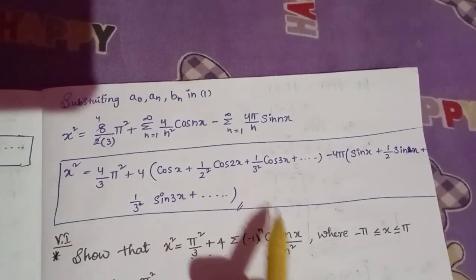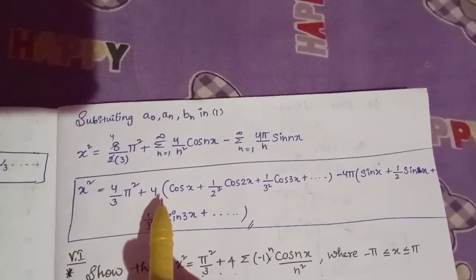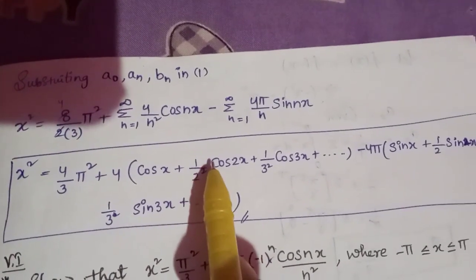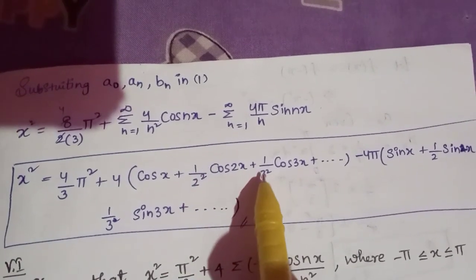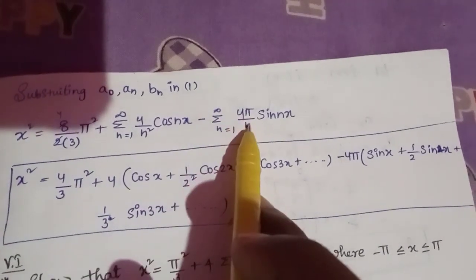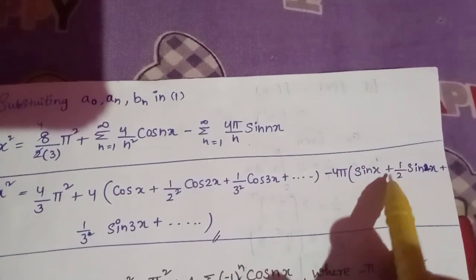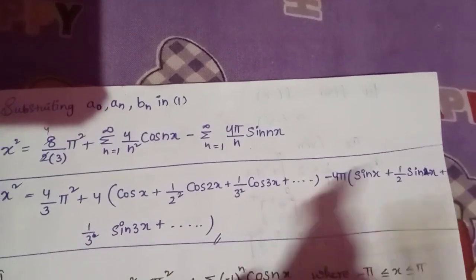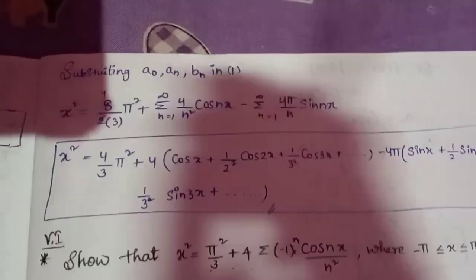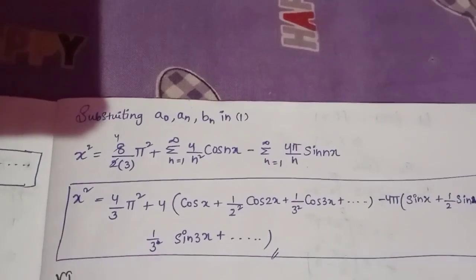So x² equals 4π²/3 plus 4[cos(x)/1² + cos(2x)/2² + cos(3x)/3² + ...] minus 4π[sin(x)/1 + sin(2x)/2 + sin(3x)/3 + ...]. That is the final Fourier series expansion. Please support me, friends — please share it with us. Thank you, friends.